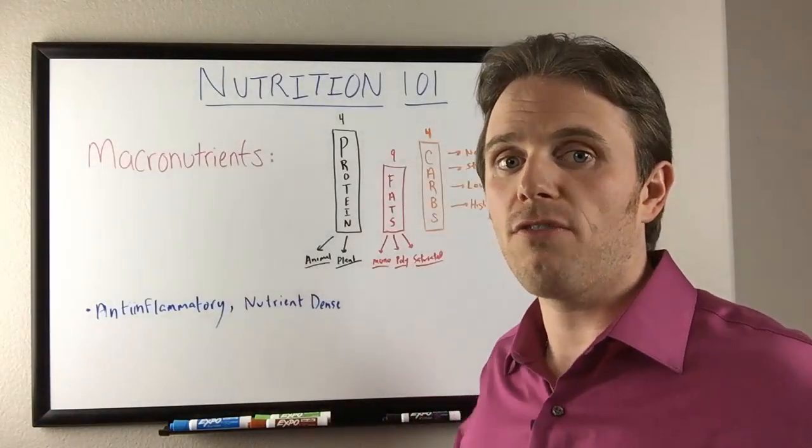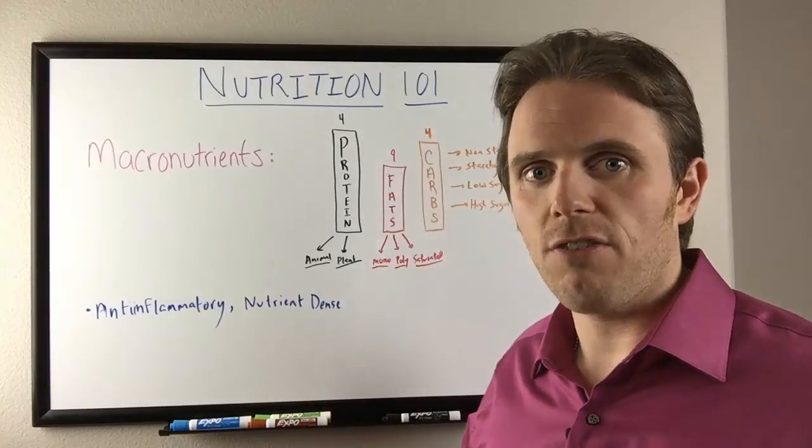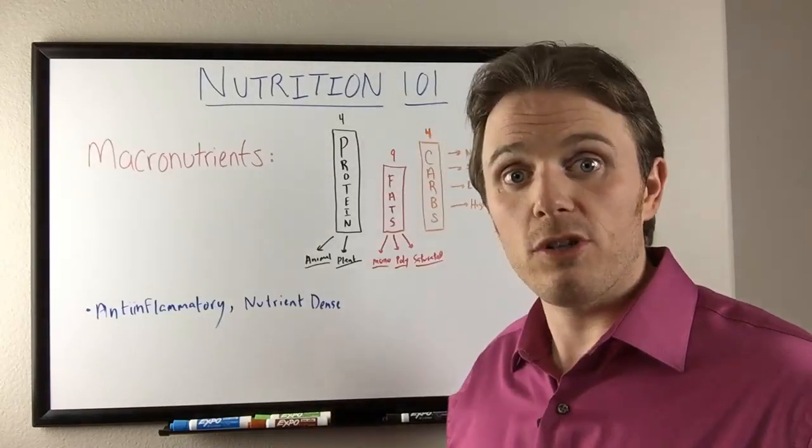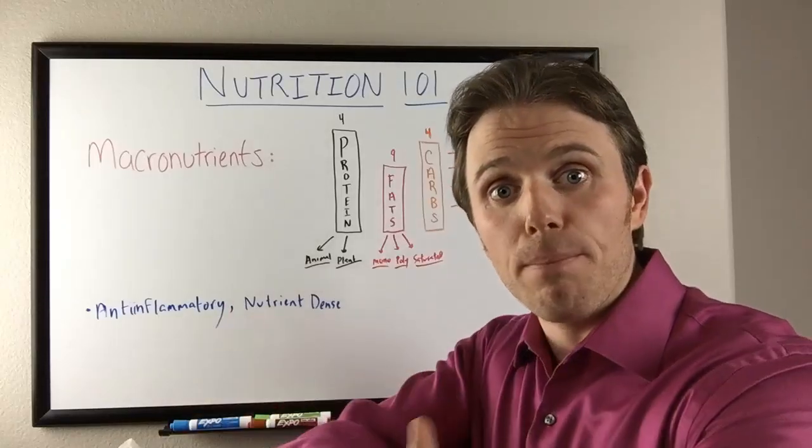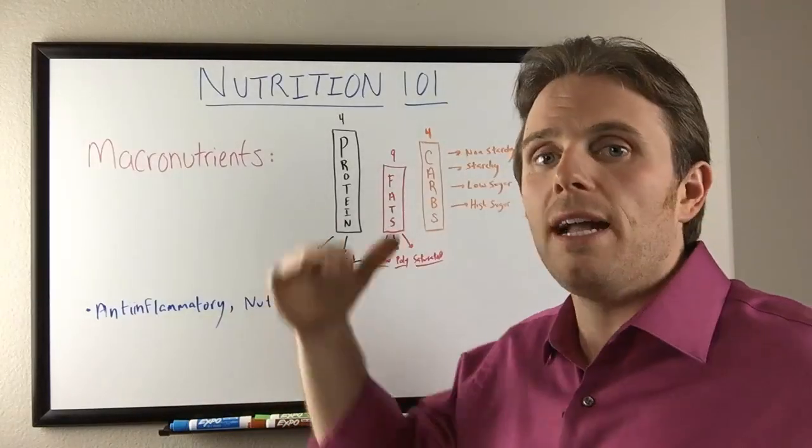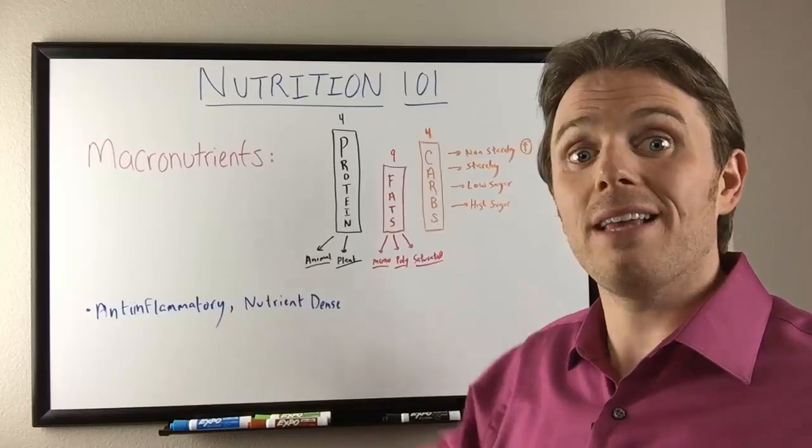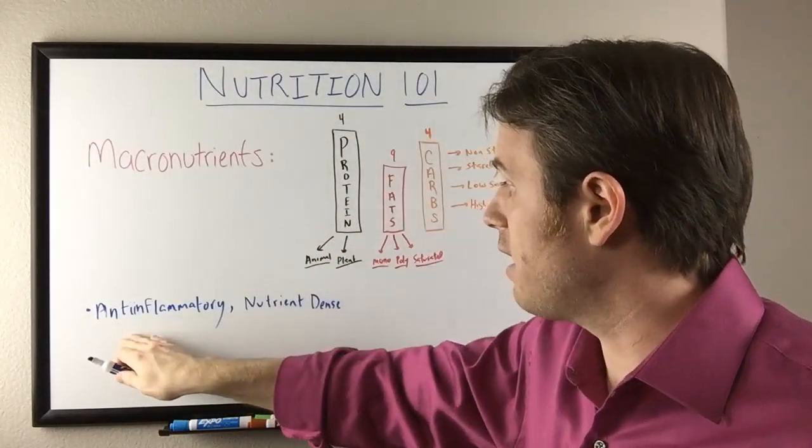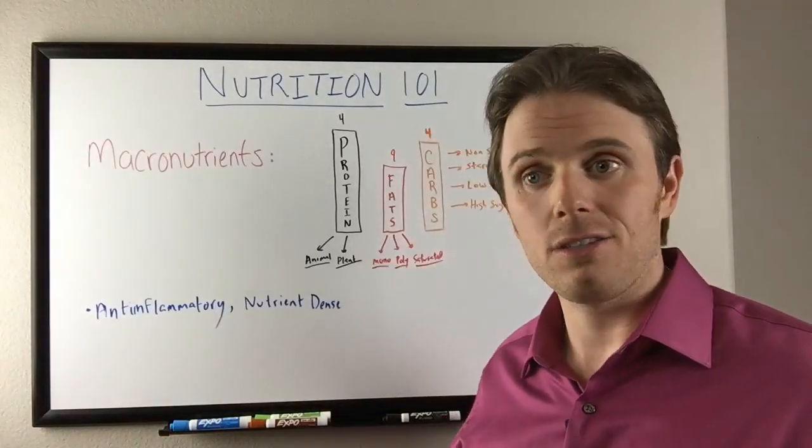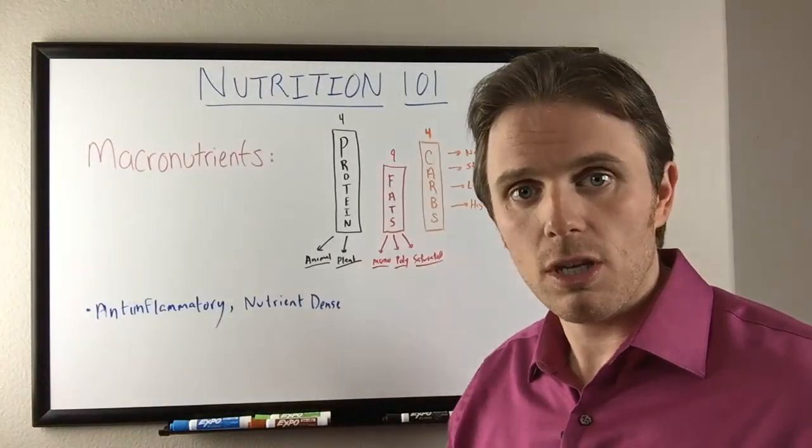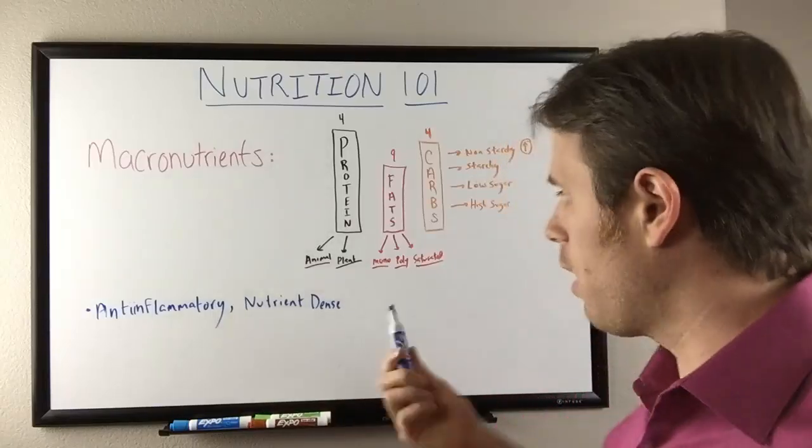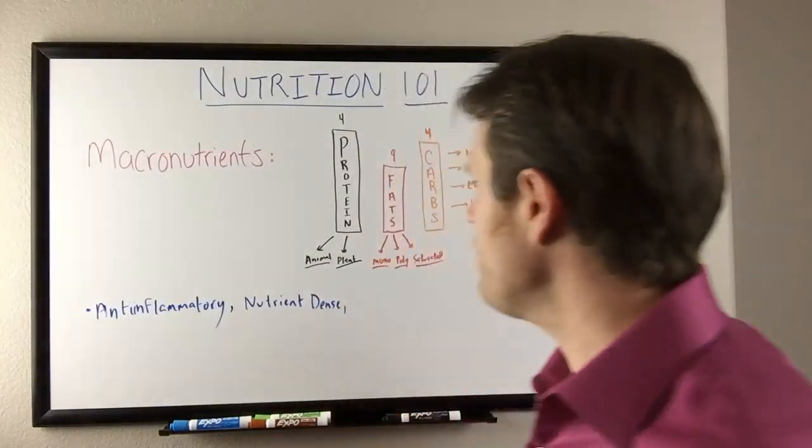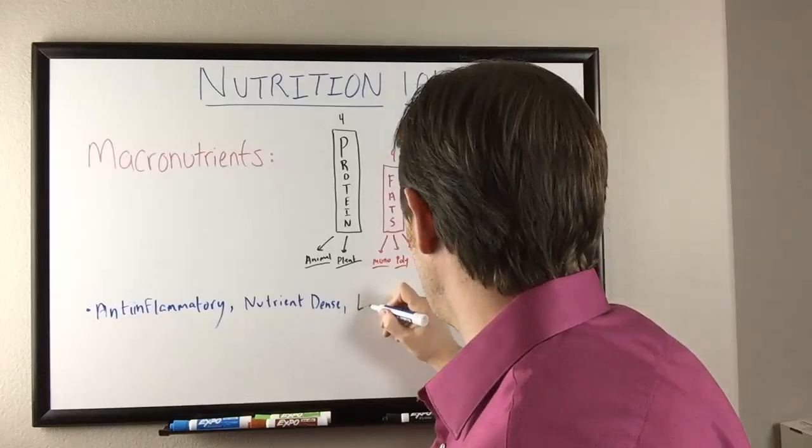And then when you actually factor in the gut irritation, the lectins, the phytates, the oxalic acids, which actually can chelate, they can hug and pull more nutrients out. It's actually even more nutrient poor and it's very inflammatory. That's why grains don't fit. It's anti-inflammatory. It's nutrient dense and it can be toxic. It's got gliadin in it, gluten essentially, and wheat germ agglutinin, other lectins.